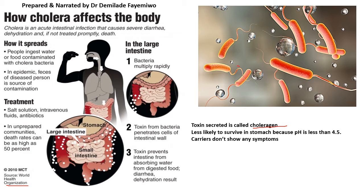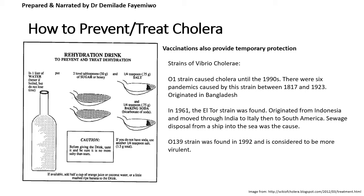The structure of Vibrio cholerae is a rod-shaped bacterium with a single flagellum attached to it, and it also has structures that allow it to attach to the walls of the intestines. There is a treatment for cholera called a rehydration drink — also known as ORT (oral rehydration treatment) or ORS (oral rehydration solution). It contains sugar, salt, and baking soda added to one litre of water. It is given to anyone infected with cholera to rehydrate them, because dehydration can be very dangerous if left untreated.